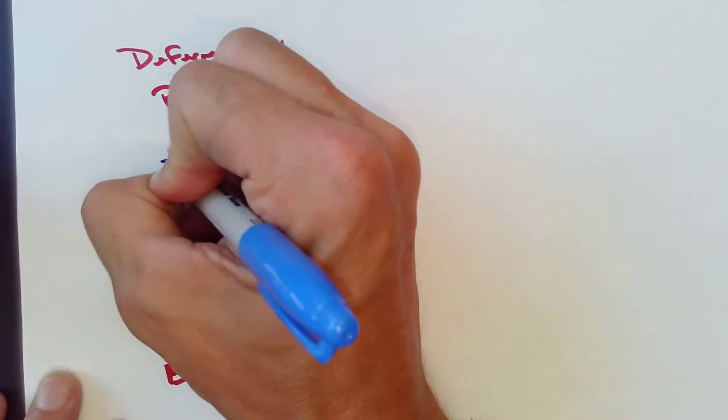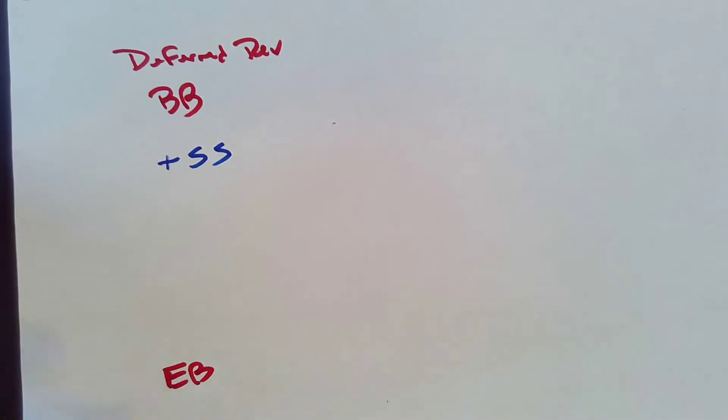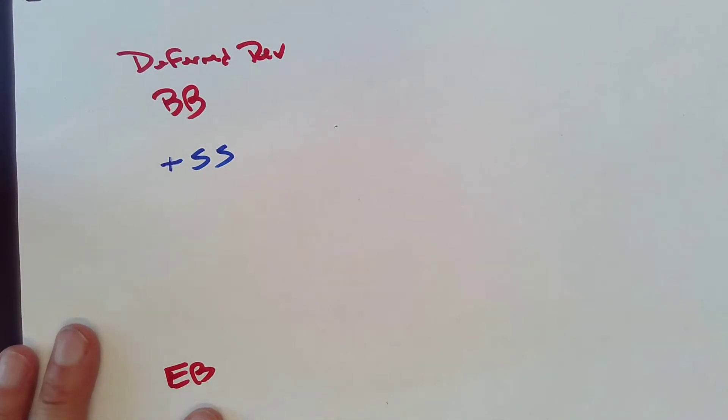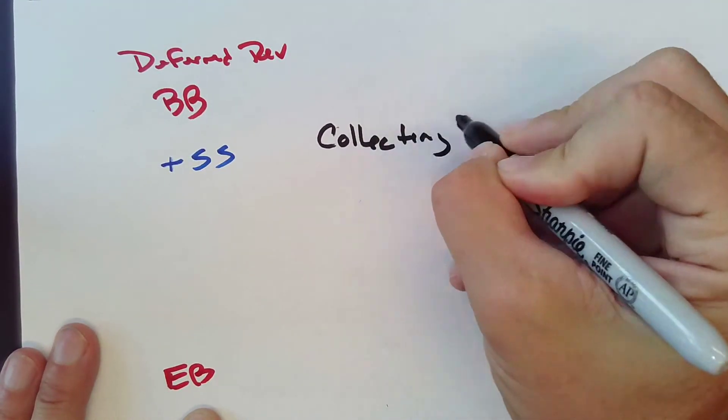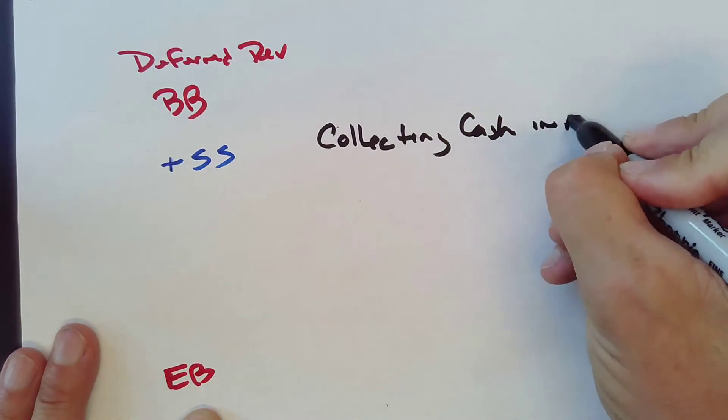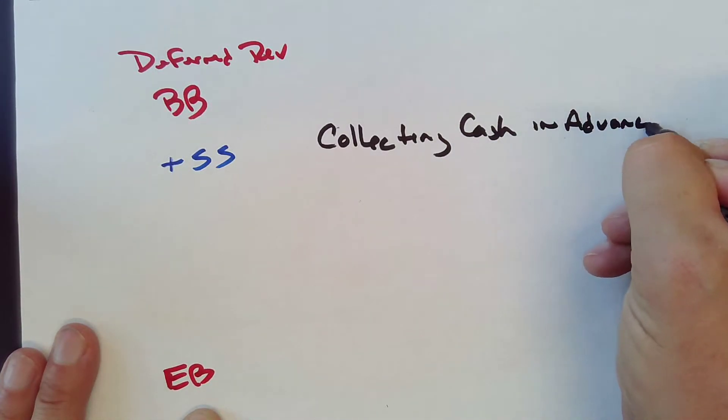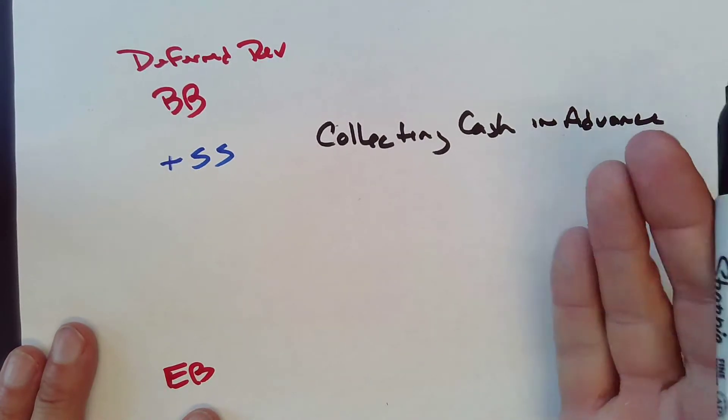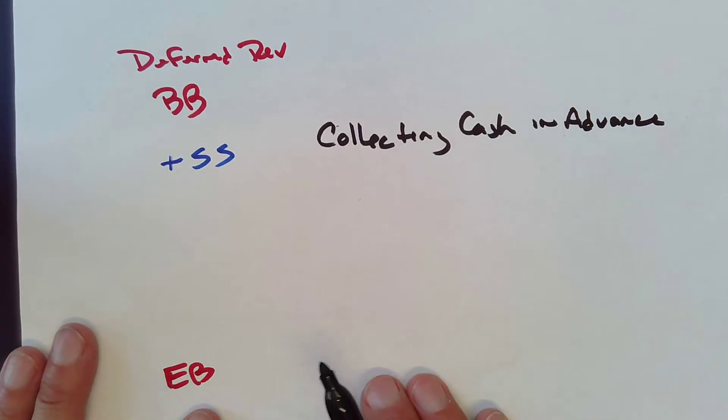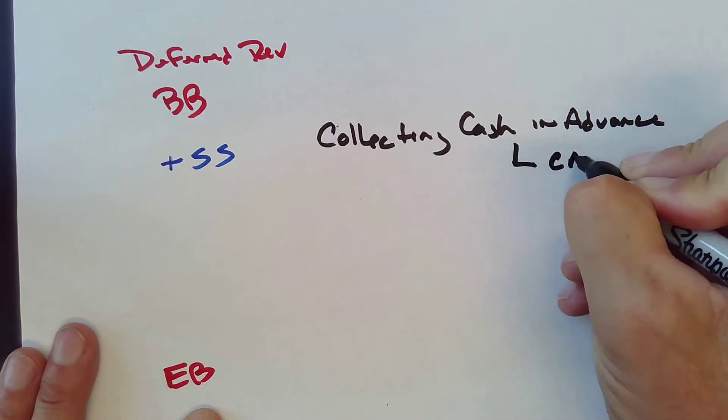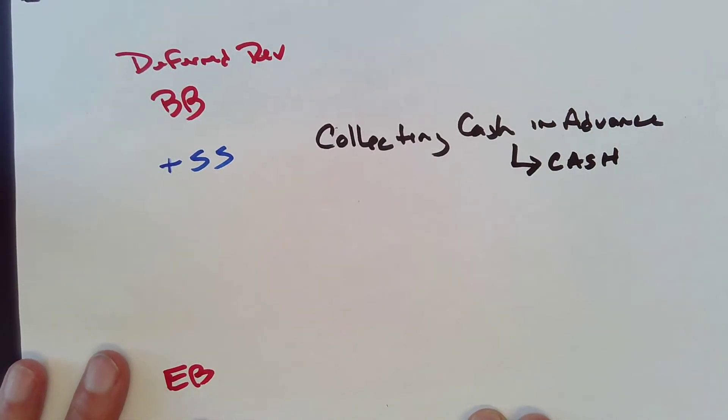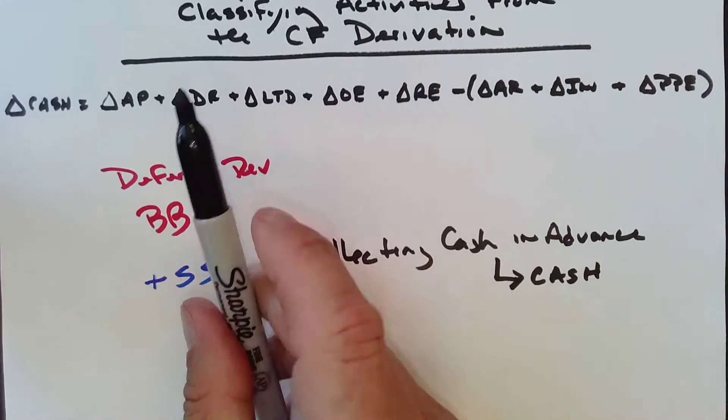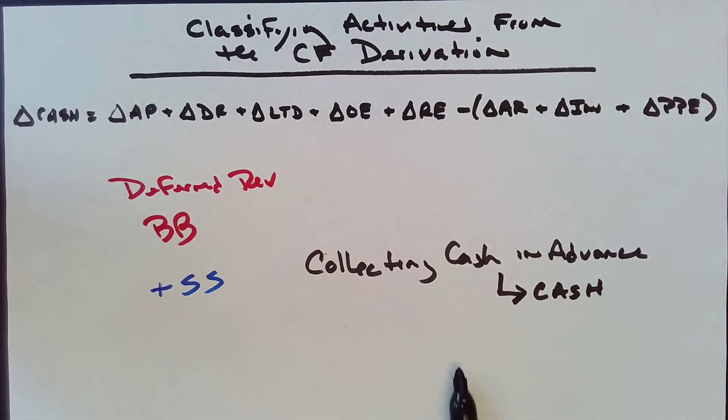And what's going to make Deferred Revenue increase? What's going to make Deferred Revenue increase is collecting cash in advance. In advance of recognizing the revenue. So, cash. So when Deferred Revenues go up, my cash goes up.